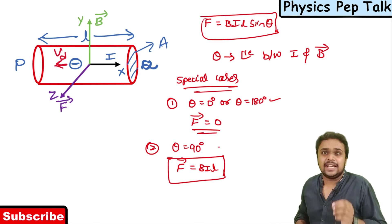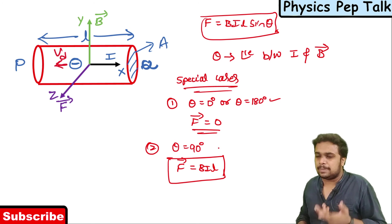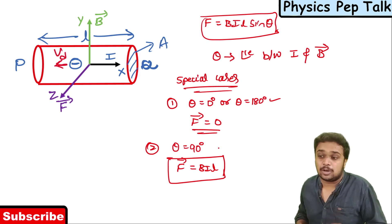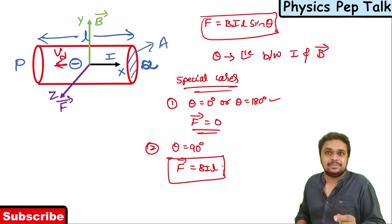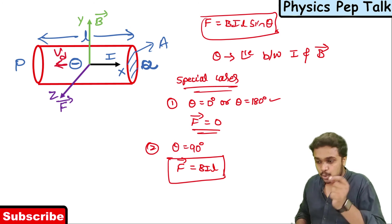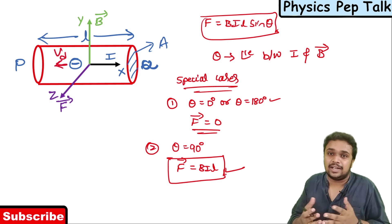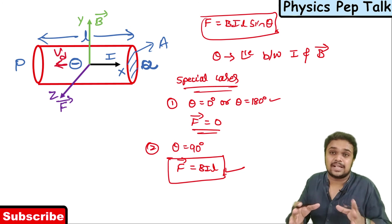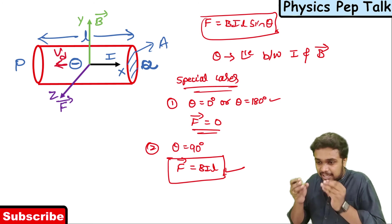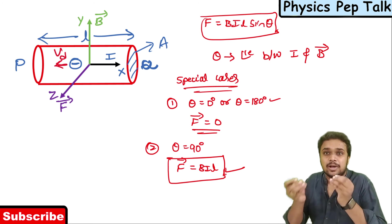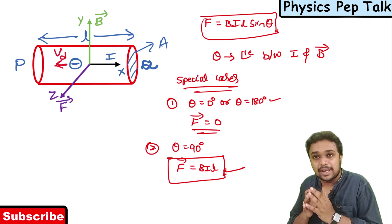This derivation appears in previous year question papers. It is an important derivation — using this you have to derive more than one result to get five marks. So the basic concept of this derivation should be clearly understood.